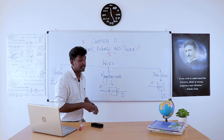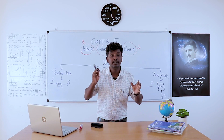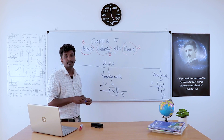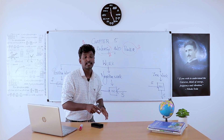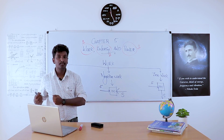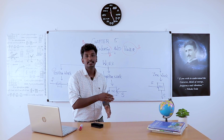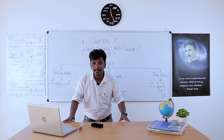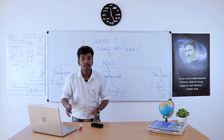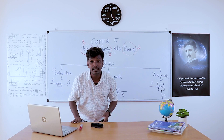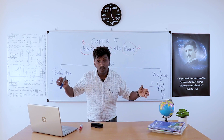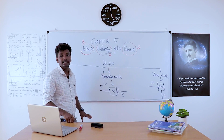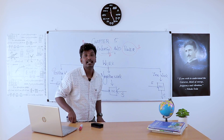If the object moves in the direction of force — that means force and displacement are in the same direction — then work is positive. An example of positive work is when we are pushing or pulling a table, where the applied force and direction of motion are in the same direction. In negative work, the applied force and displacement are in opposite directions.